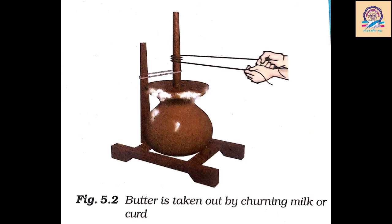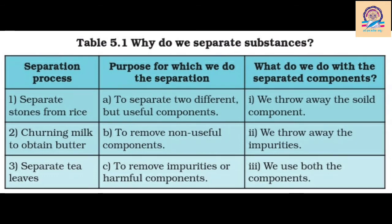We have discussed many examples of separation, but all these examples involve large quantities or bigger sizes. But imagine if you have a glass of sand with salt mixed in it and you are told to separate the salt from the sand — how can you do that? It seems almost impossible. So why is this separation required? Why do we need to separate substances?